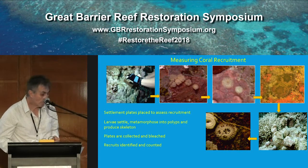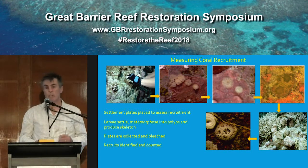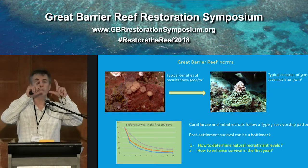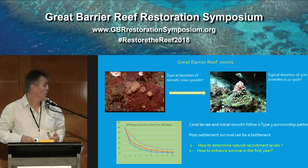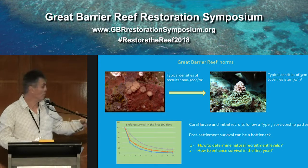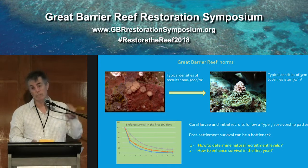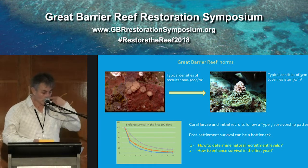The typical densities, if you extrapolate from tiles that are 4x4 inches, or 10x10 cm, to the square meter, the typical densities on the GBR are in the thousands per square meter each year. One to 5,000 is common.